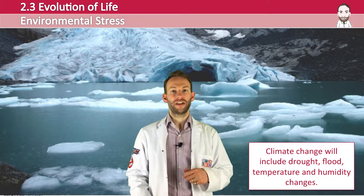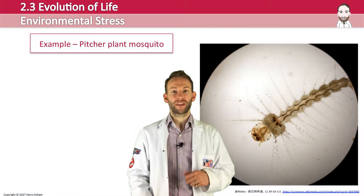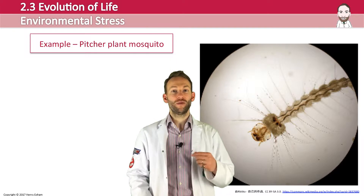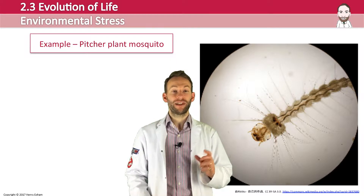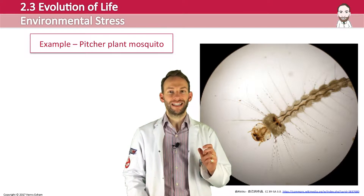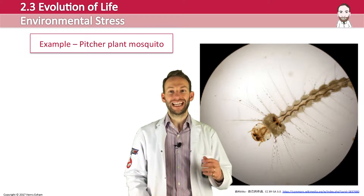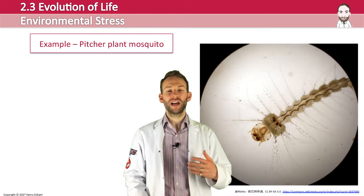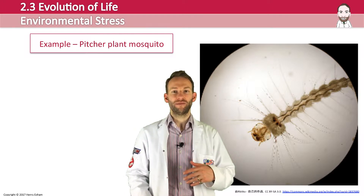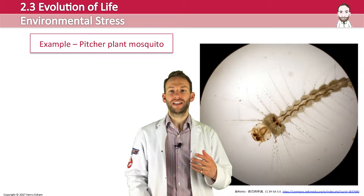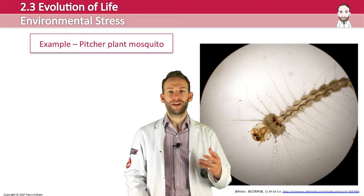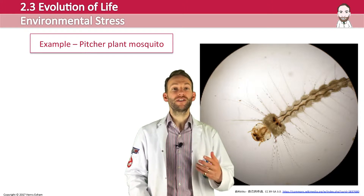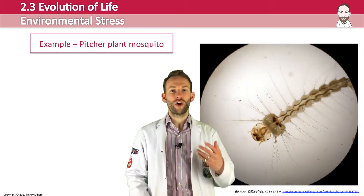An example of this is the pitcher plant mosquito. This mosquito's phenotype has actually changed in line with changing temperatures. It normally spends winters hibernating, but it's now much more active later in the year. They respond to day length which triggers dormancy. Because it's getting warmer and the climate is changing, it has actually changed the allele frequency due to these longer periods of activity.